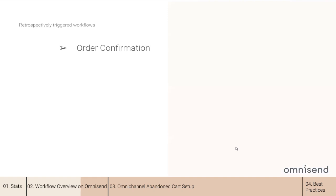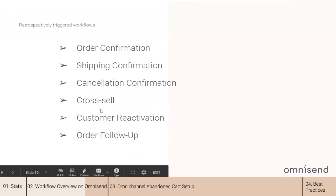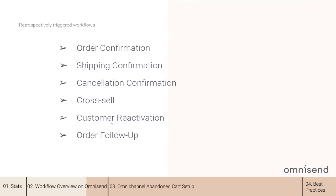All automation workflows are triggered when a particular event happens, but some of them can be triggered after some time passes by using a delay block. For example, order confirmation, shipping, cancellation confirmation, cross-sell, customer reactivation, and order follow-up. For instance, if we create a customer reactivation workflow and add a delay block of 30 days, customers who last purchased something 30 days ago will start receiving the messages. Use the delay to send messages related to orders made in the past — that's quite useful.